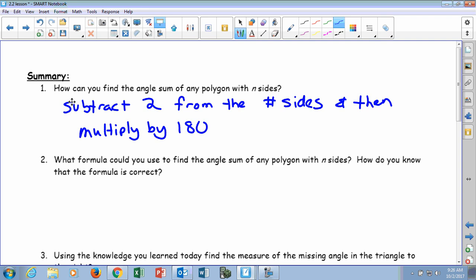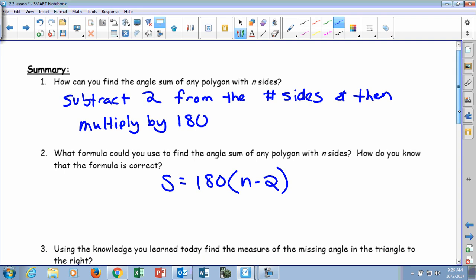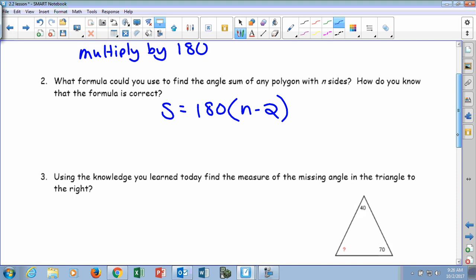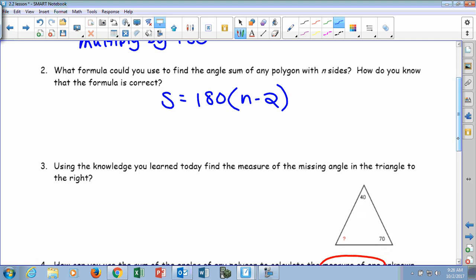And again, that's basically the formula. Our little shortcut that we discovered after we did all the tables. So it says, using the knowledge you learned today, find the measure of the missing angle. So if we need to find this angle down here in the triangle, how can we find that missing angle?